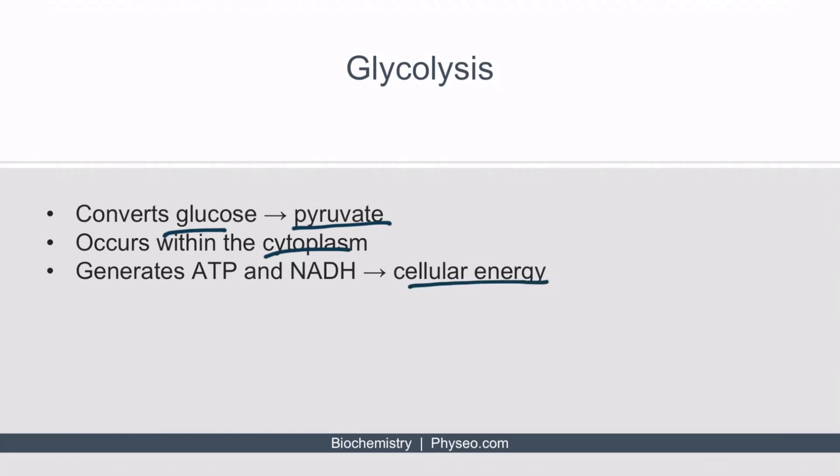This is achieved through the production of two important molecules: adenosine triphosphate, or ATP, and nicotinamide adenine dinucleotide, or NAD. When NAD is bound to a hydrogen molecule, it's called NADH.